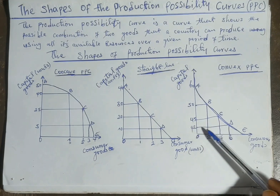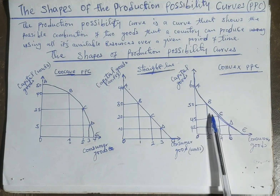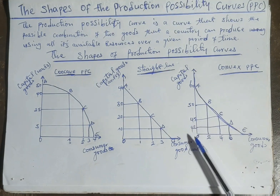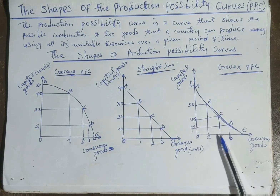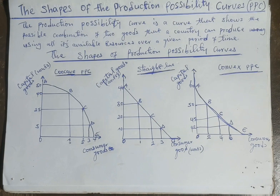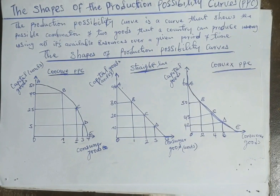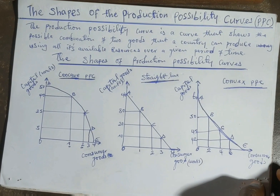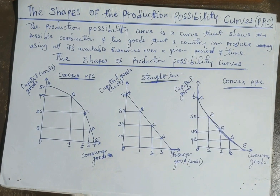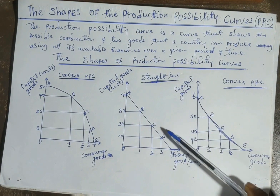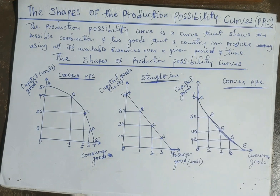This shows that resources are more suitable for the production of both goods. So thank you — this is just a short video discussing the shapes of PPC: concave, straight line, and convex. In tomorrow's video, we are going to use these shapes of PPC to explain the concepts of choice, scarcity, and efficiency.